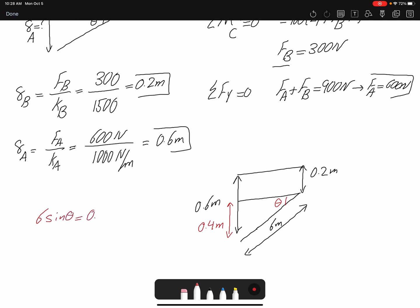If you want to find this angle, we know 6 sine theta gives us 0.4. Therefore theta is sine inverse of 0.4 over 6, which is 3.82 degrees. That's what the problem is asking for. This was the original beam before the deformation, and this is the geometry of the beam after the deformation, and we could find the angle of tilt.